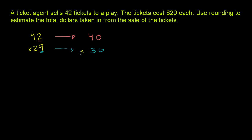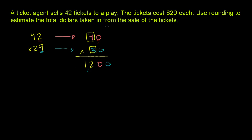Now we can multiply. And here, once again, we can use — you could call it a trick, or hopefully you understand why it works. 30 times 40 is the same thing as 3 times 4, but we put two zeros at the end of it. 3 times 4 is 12, and then we have two zeros — one from the 30 and one from the 40. So we're going to have roughly $1,200 taken in from sales of the tickets. That is our estimate.